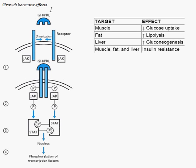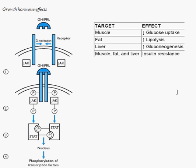Growth hormone acts on the JAK-STAT pathway. When it binds to the JAK-STAT receptor, it dimerizes. The JAK proteins bind to the intracellular part and phosphorylate intracellular molecules like STAT, causing transcription. The main effects are on muscle — decreasing glucose uptake, causing hyperglycemia — fat, causing lipolysis, and liver, causing gluconeogenesis. Essentially, all of this is putting energy into the body.